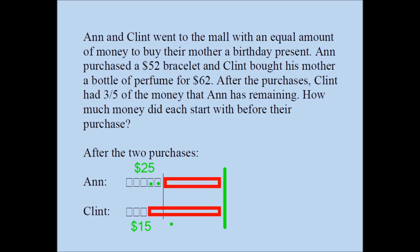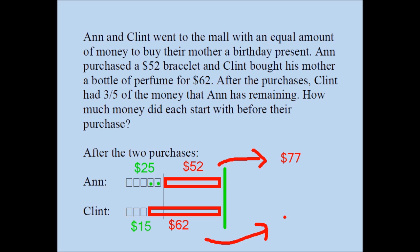The red part is easy: Clint's purchase was $62 and Ann's was $52. The question asks how much money did each have before their purchase. Ann had $52 plus $25, which is $77. And of course Clint had the same amount — if you add $15 to $62, you get $77 as well. So the answer is $77. I wouldn't add the two together because they want us to find how much money each started with.